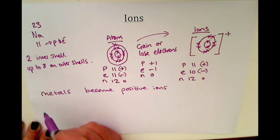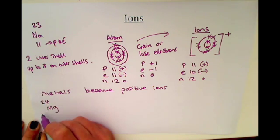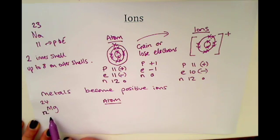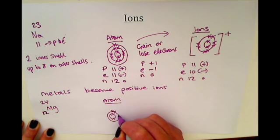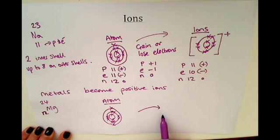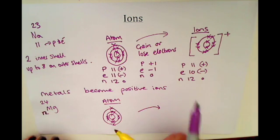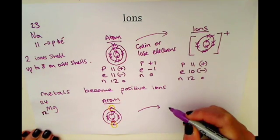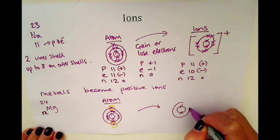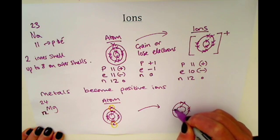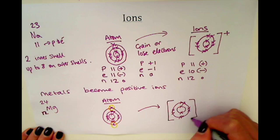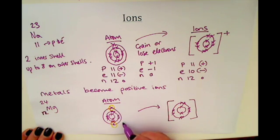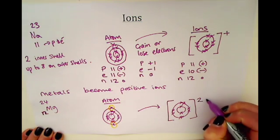Now for the example of magnesium. Magnesium as an atom would have 12 electrons with two in its outer shell - hence it's in group two. But when it forms an ion it will lose its two outer shell electrons because it wants that full outer shell. If it loses those two electrons, the next shell down would then be full, so it would have a complete outer shell and become an ion, and we put the square brackets around that.